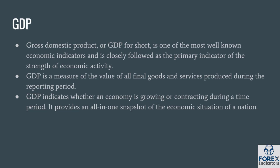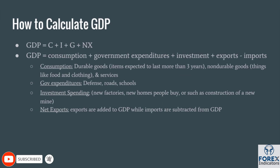GDP indicates whether an economy is growing or contracting during a time period. A positive and rising GDP relative to prior quarters indicates a nation's economy is growing, while a positive but lower GDP value relative to the previous quarter indicates an economy is decelerating. Here's the formula for how GDP is calculated.